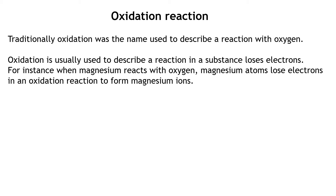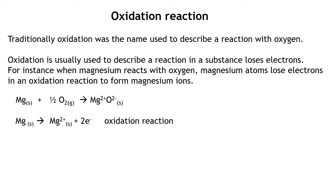Traditionally, oxidation was the name used to describe a reaction with oxygen. So if we have iron rusting and reacting with oxygen, we would say that iron was oxidised. At National 5 level, oxidation was usually used to describe a reaction in which a substance loses electrons. When magnesium reacts with oxygen, magnesium atoms lose electrons in an oxidation reaction to form magnesium ions. You'll notice that magnesium atoms are going to magnesium 2+ ions — this is an oxidation reaction. Those two electrons have to go somewhere and they get gained by the oxygen molecules to form negatively charged oxygen ions in a reduction reaction.